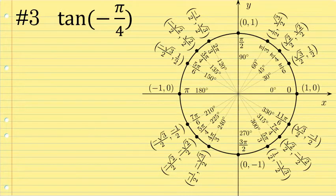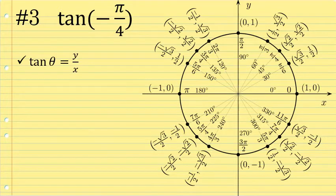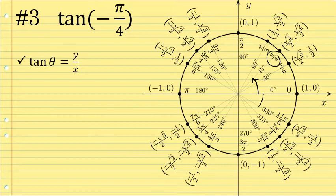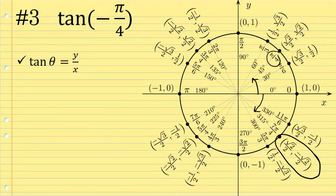For a third example, let's evaluate the tangent of negative π/4 radians. Finding the value of tangent and cotangent, and even secant and cosecant, are a bit more difficult than sines and cosines on the unit circle, but not much — it really just requires a little bit of extra simplification at the end. To find the tangent of negative π/4 radians, we'll use the ratio y over x. Positive π/4 is here; negative π/4 is that same distance but down and clockwise around the unit circle.